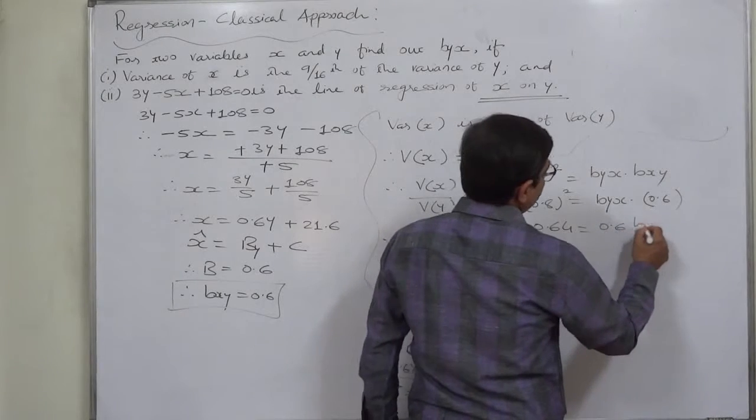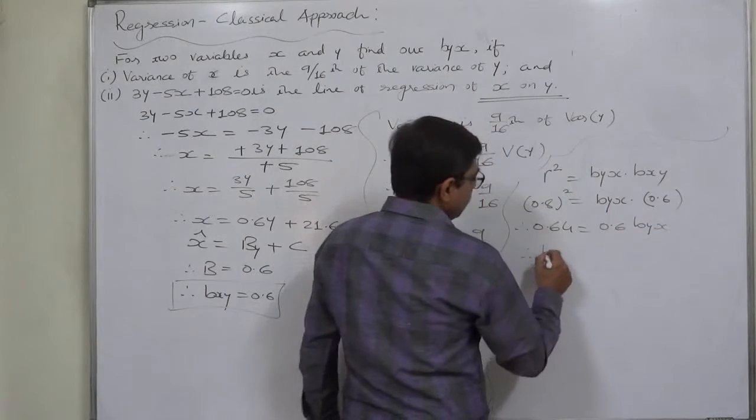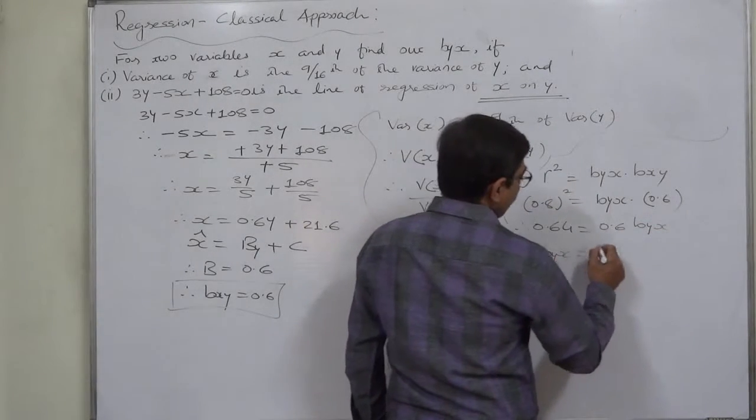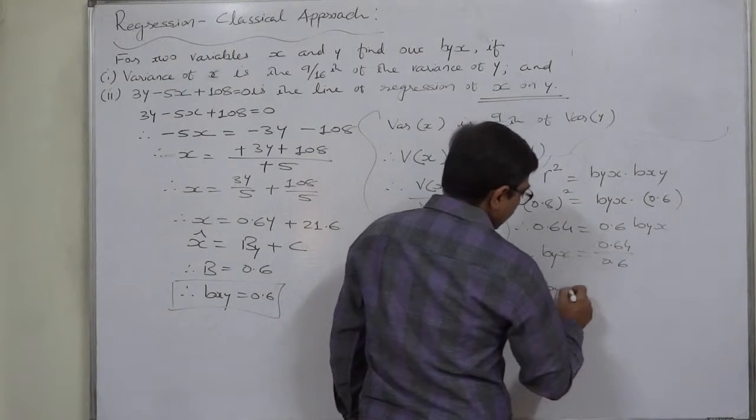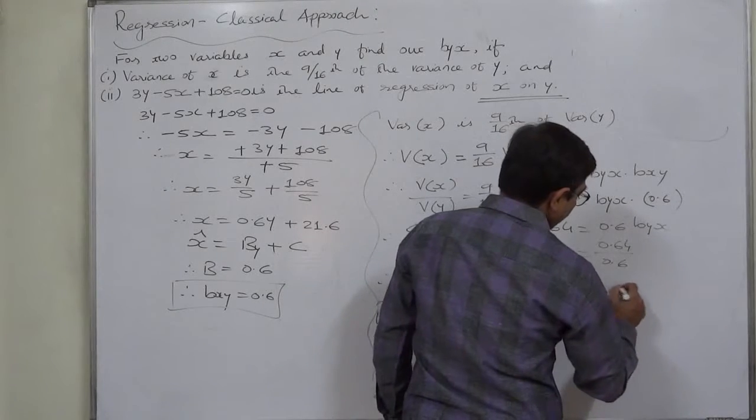That is 0.8 squared equals b_yx into 0.6. That means 0.64 equals 0.6 b_yx. So b_yx equals 0.64 divided by 0.6, which equals approximately 1.07.